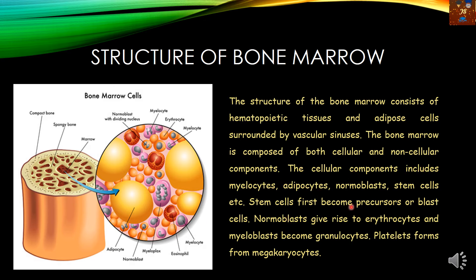Stem cells first become the precursor or blast cell — precursor meaning from which the other cells are produced. Normoblast gives rise to erythrocyte, myeloblast gives rise to granulocytes, meaning the leukocytes which contain granules, and the platelet forms from the megakaryocyte.